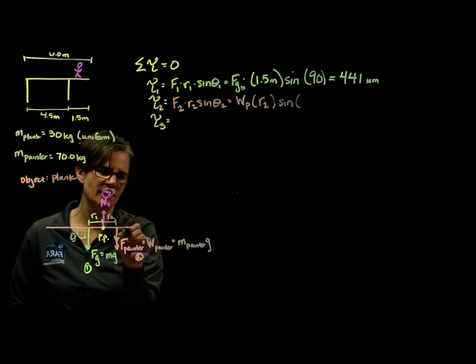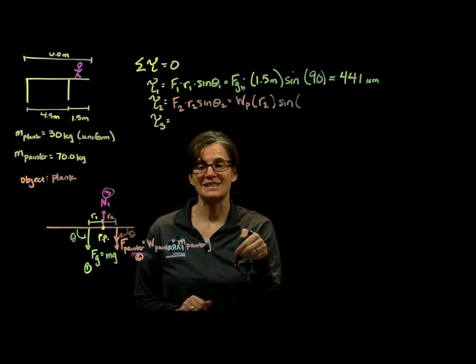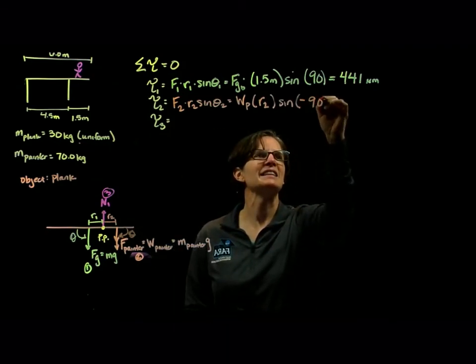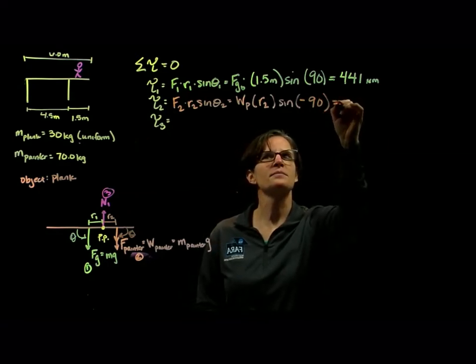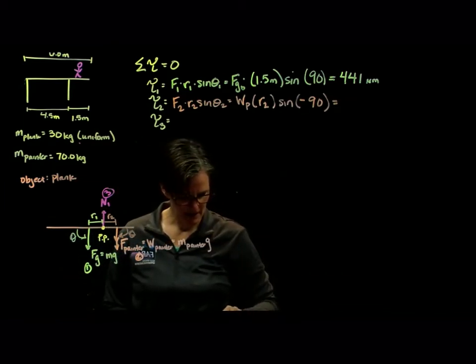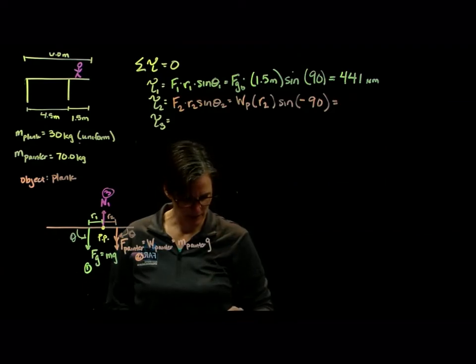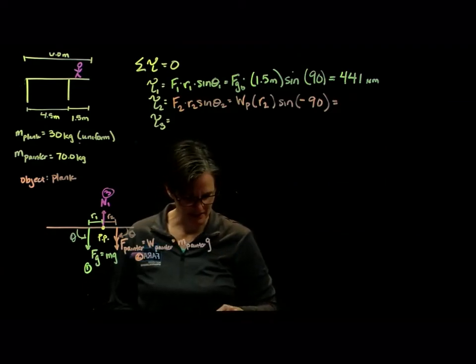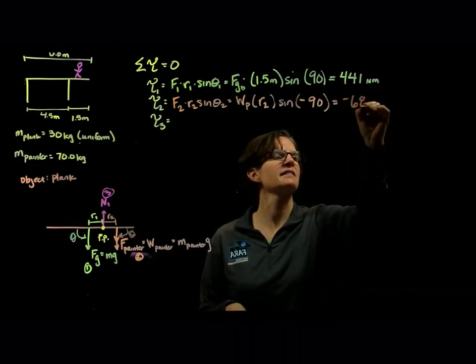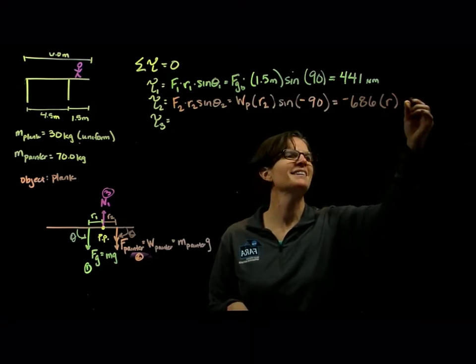Times the sine of the angle. So we extend the radius, curl in the direction of the force. It's 90 degrees, but it's negative 90. We know the weight of that painter to be 70 times 9.8. We do not know the radius, but the sine of negative 90 is going to give me a negative 1. And we get minus 686 times the radius, whatever that may be, newton meters.